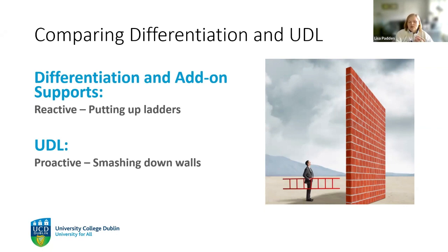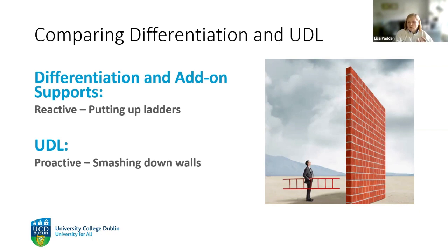Universal design is more proactive — it's really about smashing down the wall in the first place. For example, if a student has a financial need, rather than only putting in more scholarships or emergency financial support, we look at the institution and ask where it's providing a financial burden. What is the cost of food, transport, accommodation? What can we change to reduce the cost not just for one student, but for every student, eliminating the need for somebody to put up their hand and say they can't afford this.